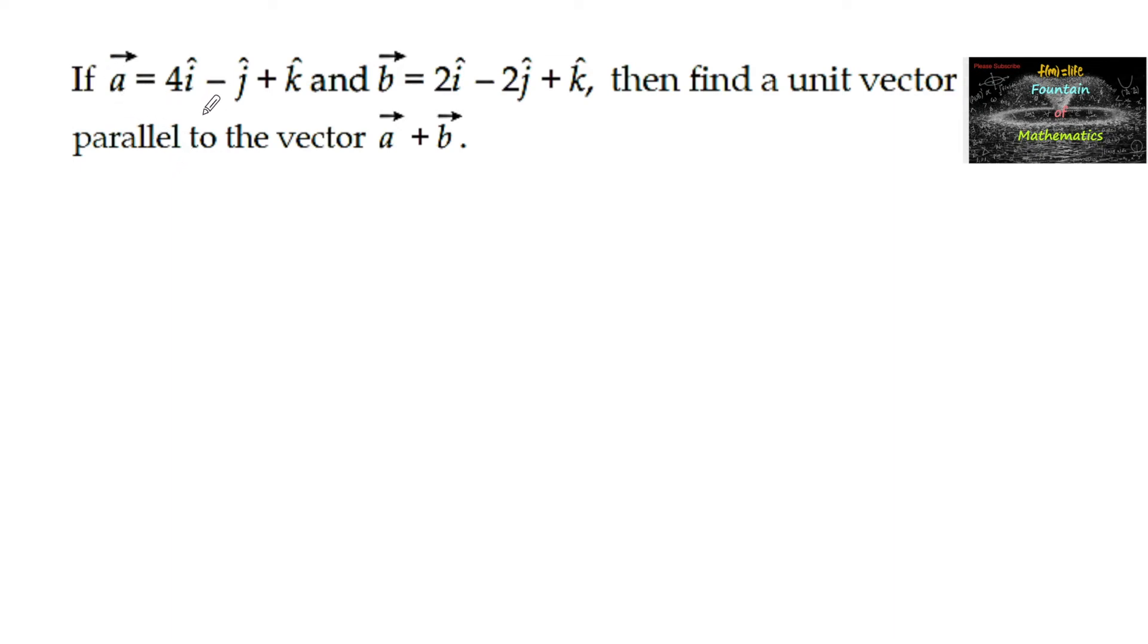If vector a is equal to 4i minus j plus k and vector b is equal to 2i minus 2j plus k, then find a unit vector parallel to the vector a plus b.